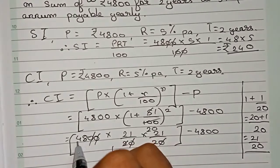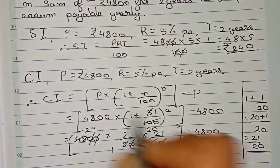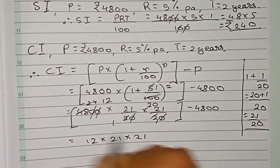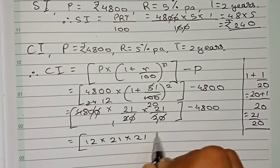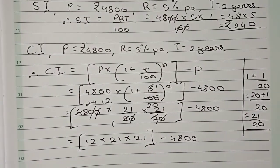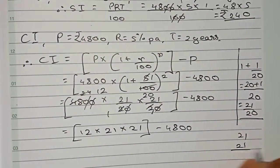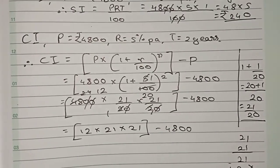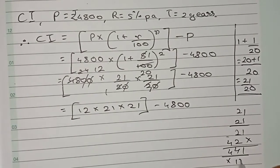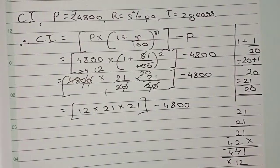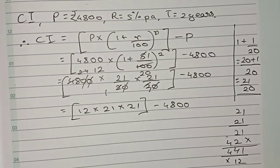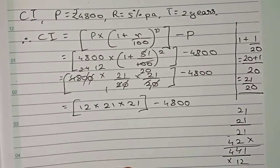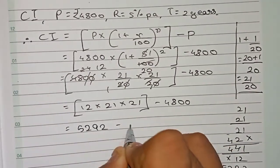Cutting zeros, four thousand eight hundred reduces to twelve. So it becomes twelve into twenty-one by twenty into twenty-one by twenty, minus four thousand eight hundred. Computing twenty-one into twenty-one: that gives four hundred forty-one. Then four hundred forty-one into twelve equals five thousand two hundred ninety-two. So five thousand two hundred ninety-two minus four thousand eight hundred gives rupees four hundred ninety-two as the compound interest.